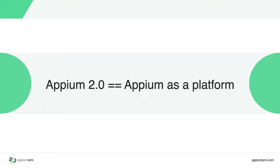One of the main goals of Appium 2.0 is to open up Appium as a platform for automation development, allowing anyone in the world to build new drivers or plugins for Appium and share them.